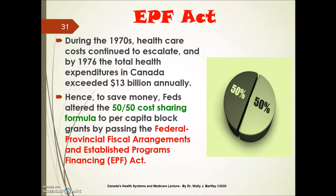The Federal-Provincial Fiscal Arrangements and Established Programs Financing Act, or EPF Act for short, came about. In the 1970s, healthcare costs continued to escalate, and by 1976, total health expenditures in Canada exceeded $13 billion annually. Hence, to save money, the federal government decided to alter this 50-50 cost sharing formula to so-called per-capita block grants by passing the EPF.